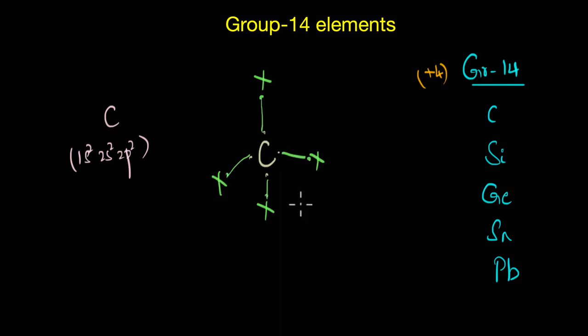What do you see? We can see that here we get an octet configuration, that is the central atom now has eight electrons around it. Here we have taken the example of carbon, but just like carbon all of the group 14 elements attain stable octet configuration in their plus 4 oxidation state.